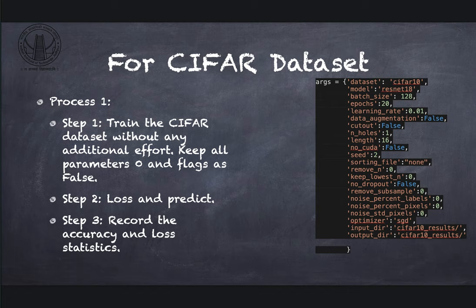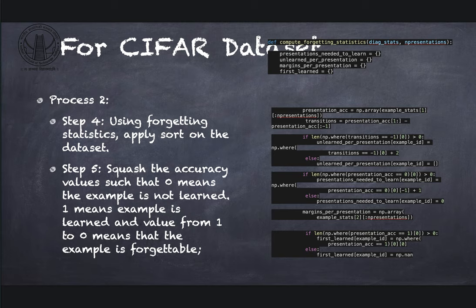In step 4, sort the dataset based on forgettable events, that is use accuracy value after training the CIFAR data to compute whether event is learned or unlearned or forgettable. Learned event is when event has accuracy of 1. Unlearned event is the event with accuracy 0. Forgettable event is the event in which you are dropping the classification accuracy from 1 to 0, where after each training epoch your classification is getting reduced, like correct classification is getting reduced for that example.